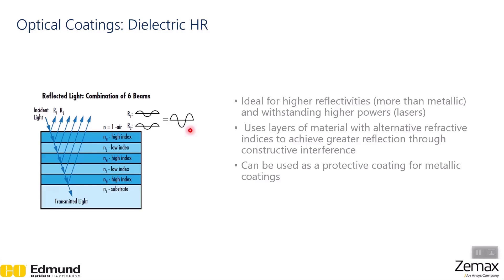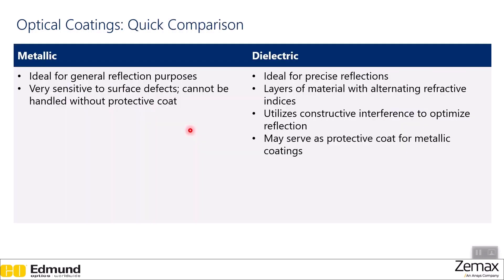Here is a brief summary: metallic HR coatings are ideal for general reflection purposes but are very sensitive to surface defects and cannot be handled without protective coatings. Dielectric coatings are ideal for precise or absolute reflection, work by layering material with alternating refractive indices utilizing constructive interference to optimize reflection, and may serve as protective coatings for metallic coatings.